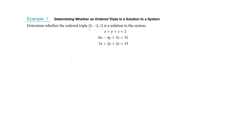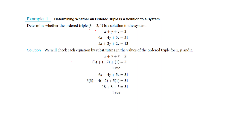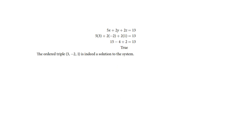If it makes each equation true, it's a point on that plane. If it's on all three of them, it must be a point where they intersect. So here we've just plugged in, replacing X with 3, Y with negative 2, and Z with 1. It makes the first one true. We do it again — make sure you substitute in with parentheses and multiply all that out. The second one is true. You plug it into the third, and it's true once again. So this is a solution to the system.